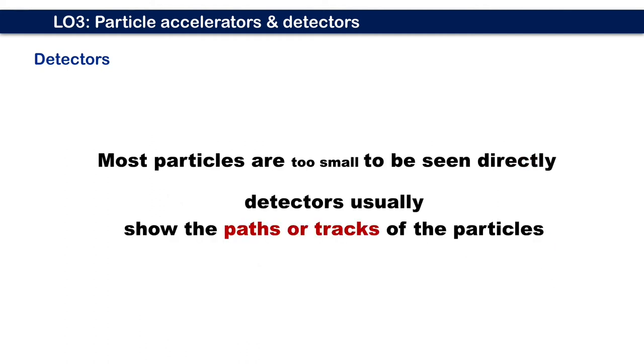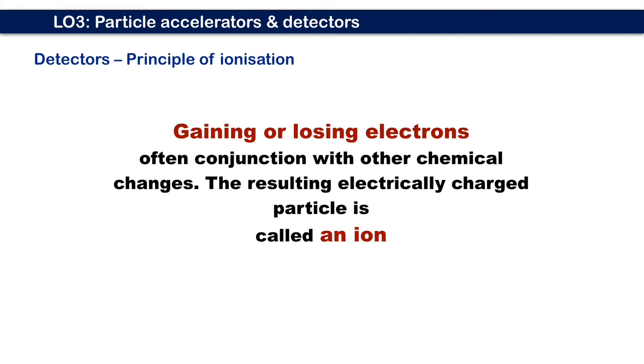Particles like protons and neutrons are very small, roughly about 0.84 femtometer or 0.84 times 10 to the power of minus 15 meters. Therefore, they are very hard to be seen directly. This is why with the help of a detector, we can identify the particle based on its track. Ionization is gaining or losing electrons, often in conjunction with other chemical changes. The resulting electrically charged particle is called an ion.